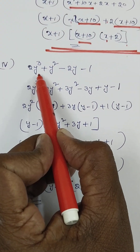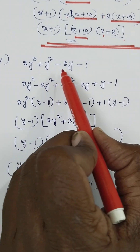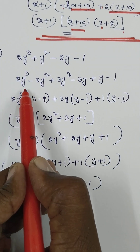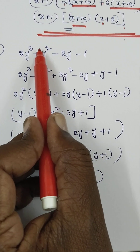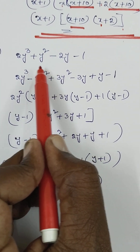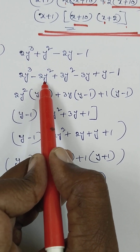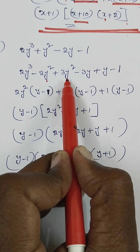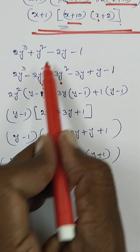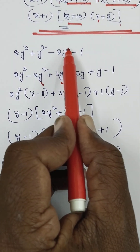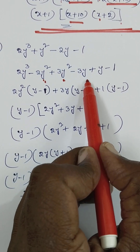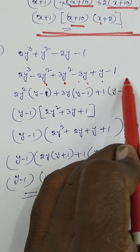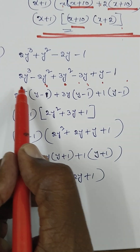Fourth one: 2y cubed plus y squared minus 2y minus 1. Rewrite y squared as minus 2y squared plus 3y squared, and minus 2y as minus 3y plus y.